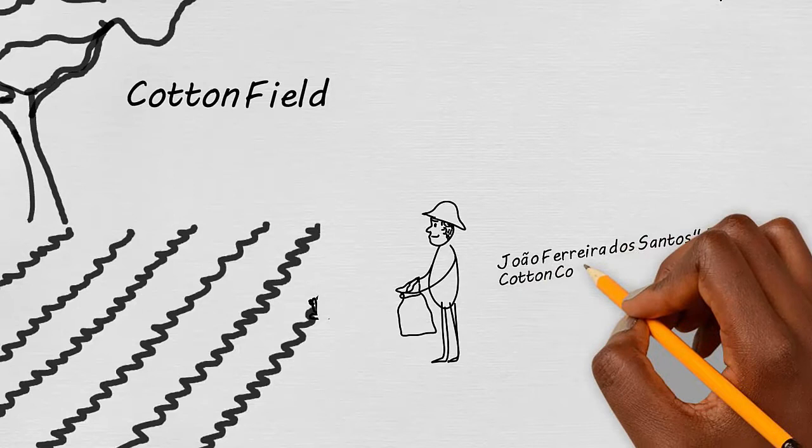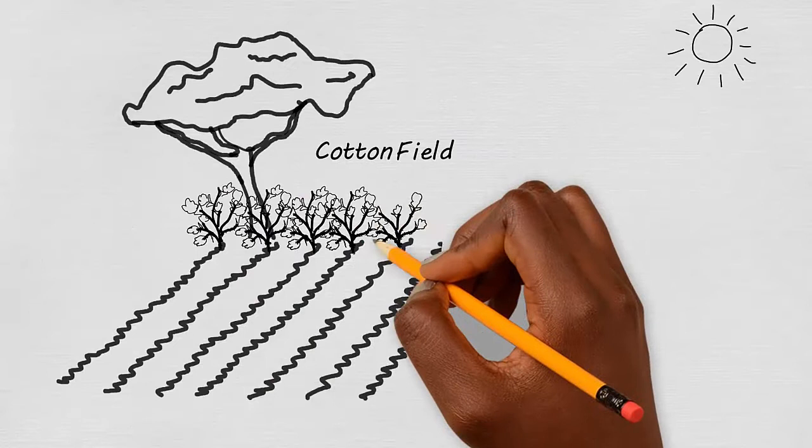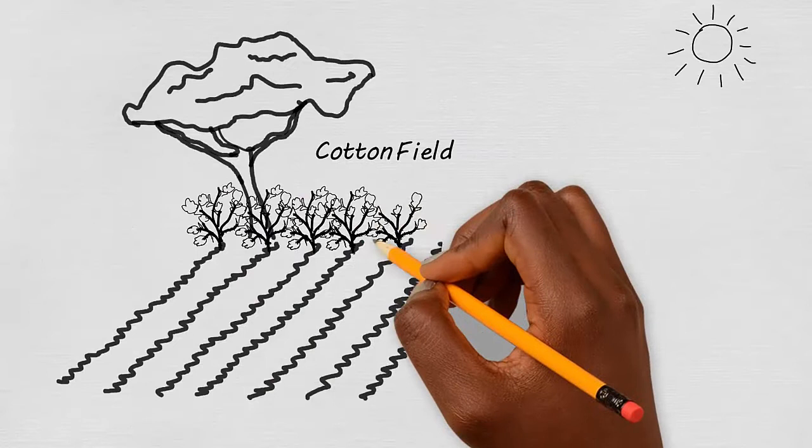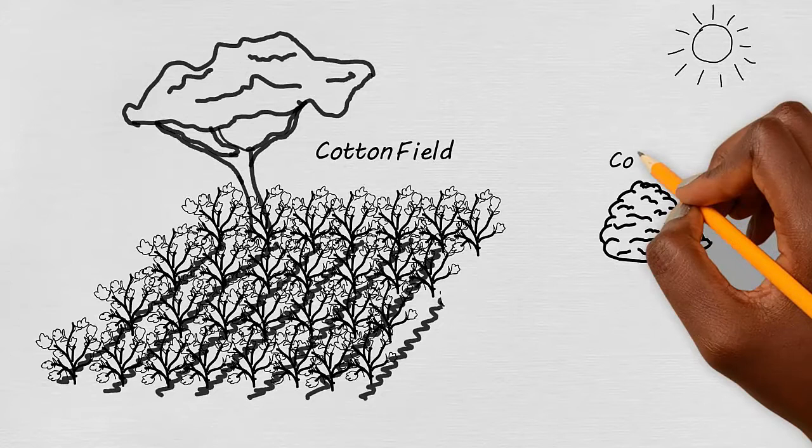They also helped us with microcredit for everything we needed. In June, all the families participated in the cotton harvest. We gathered the waste from the cotton plant in a pile and left it in the fields to dry.